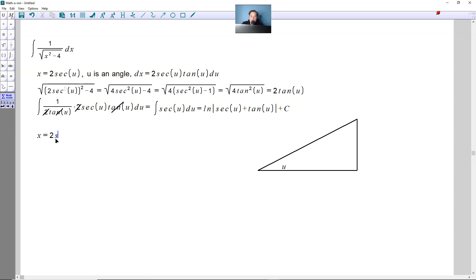Remember this basic bit, if x is equal to 2 secant of u, then this tells you that x over 2 is equal to secant of u, which means when you flip everything what you get is an equivalent statement that says that 2 over x is equal to 1 over secant,